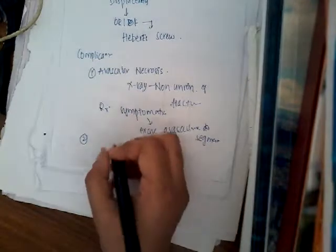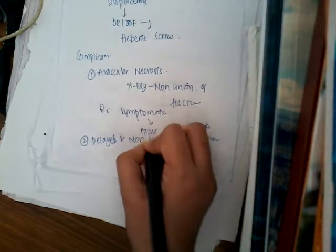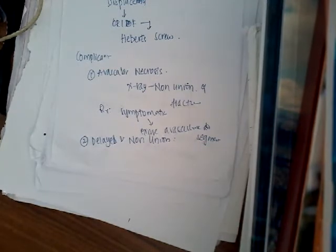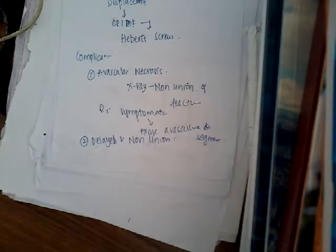The next complication is delayed union and non-union, which can be due to imperfect immobilization or impaired blood supply. If there is delayed union, bone grafting can be done. If it is a case of non-union, you will have to excise the part of the bone.